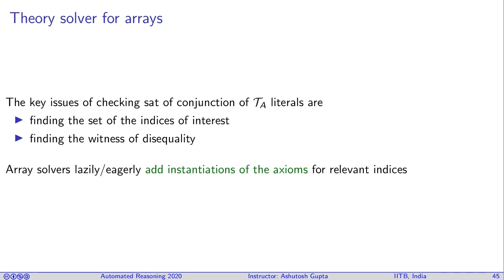So array solvers lazily or eagerly add instantiation of these three axioms for relevant indexes. And that's pretty much it for solving theory of arrays. The problem is you may end up adding too many such axioms. Then you overrun the solvers and then the reasoning becomes very difficult. If you don't add enough, then it can't derive the contradiction. Keep asking to have more axioms and eventually you find contradiction.